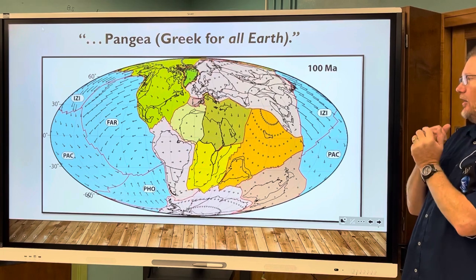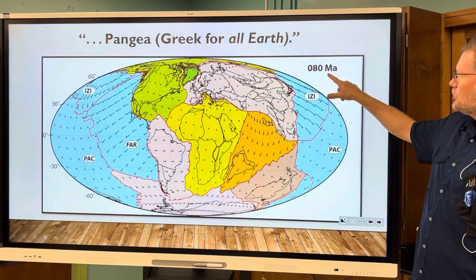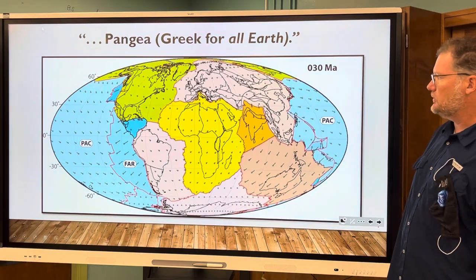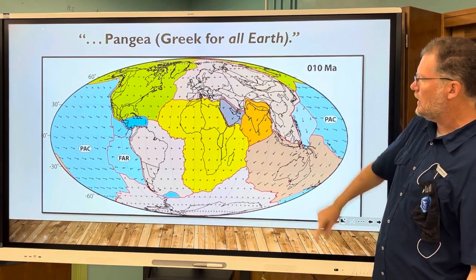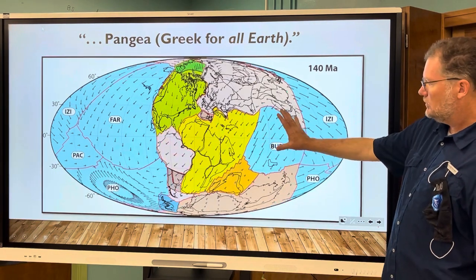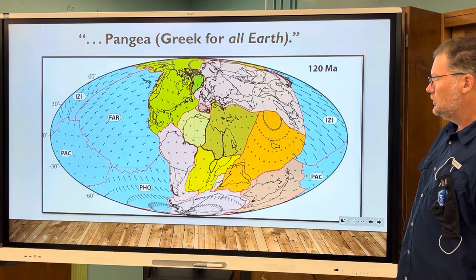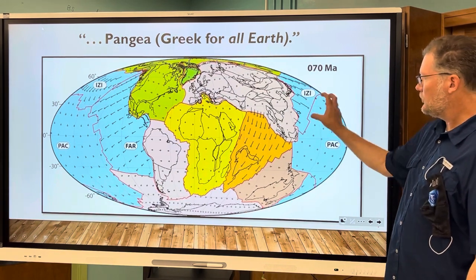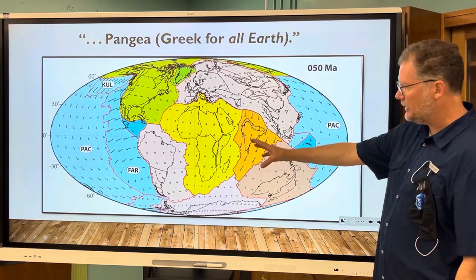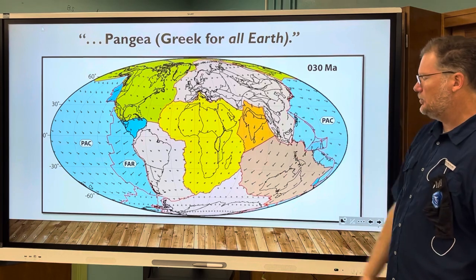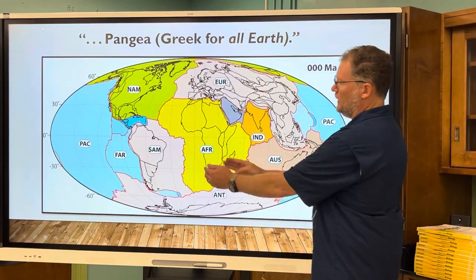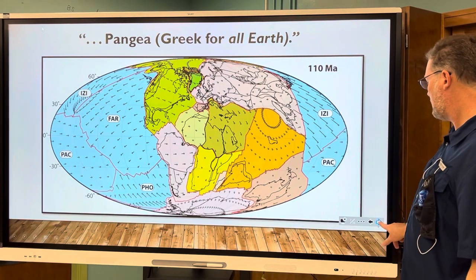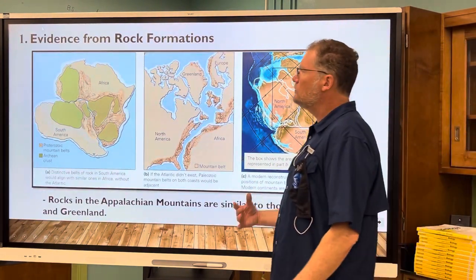If you look at this animation, you can see the separation of the continents coursing through the years — 80 million, 70, 60 million years ago — into the world we know today. India comes up and hits southern Asia. The red lines outline the different plates: the African plate, South American plate, North American plate, Pacific plate, and so on. You can see some plates are getting larger while the Pacific plate is getting smaller.